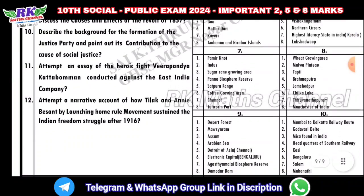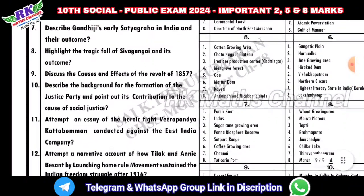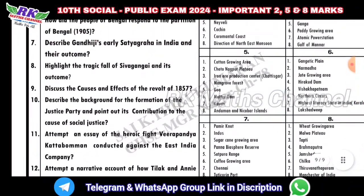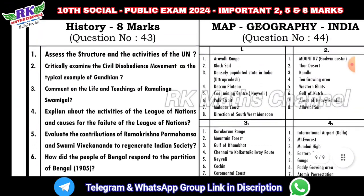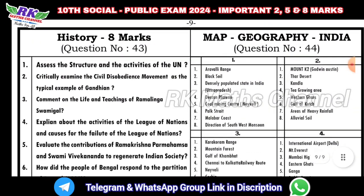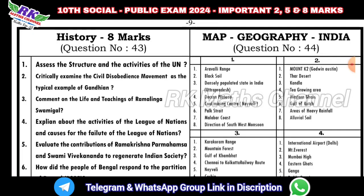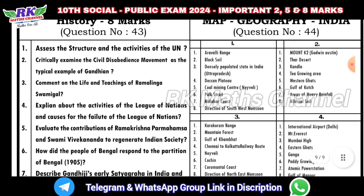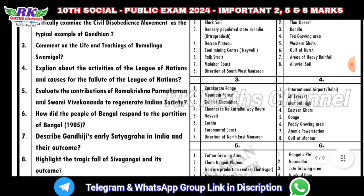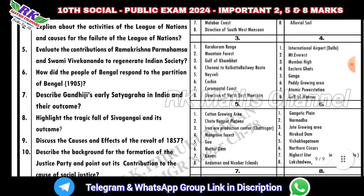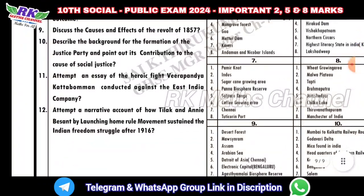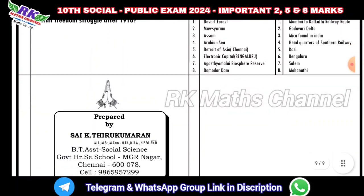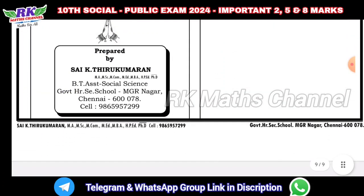For 8-mark questions in history, these are repeat questions. You can search for the answers. Question number 44 involves the India map — this is the reverse path with models you can find. So this is the important 2-mark, 5-mark and 8-mark questions.